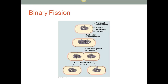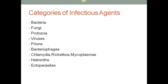With binary fission, you can think of subdivision of a cell — the prokaryote duplicates its chromosomes and then divides into two cells. Now we have our list of categories of infectious agents. Bacteria are the most common cause that we identify, but we'll talk about each of the other categories also.